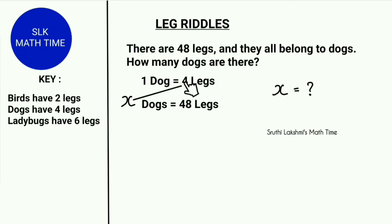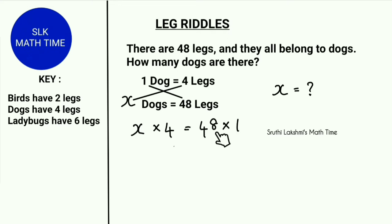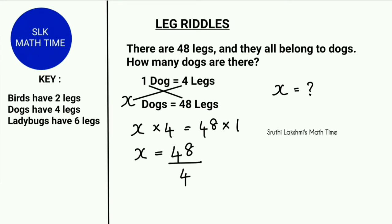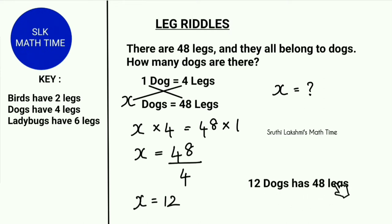So let's cross multiply: x into 4 must equal 1 into 48, or 48 into 1. Both of these equations are equal and give the same answer. Since 4 is in multiplication, when it goes to the other side it becomes division. So x equals 48 divided by 4. Since 48 divided by 4 is 12, x must equal 12. So 12 dogs have 48 legs.